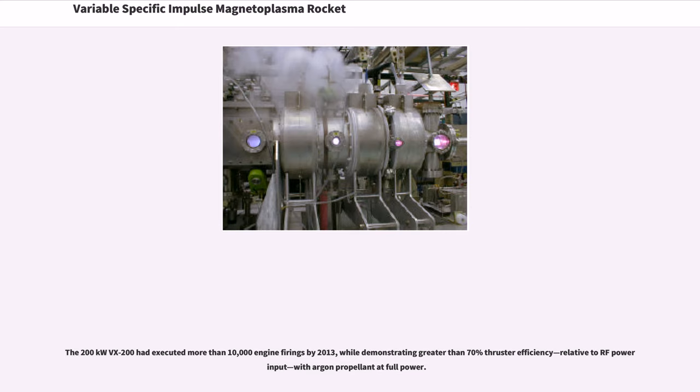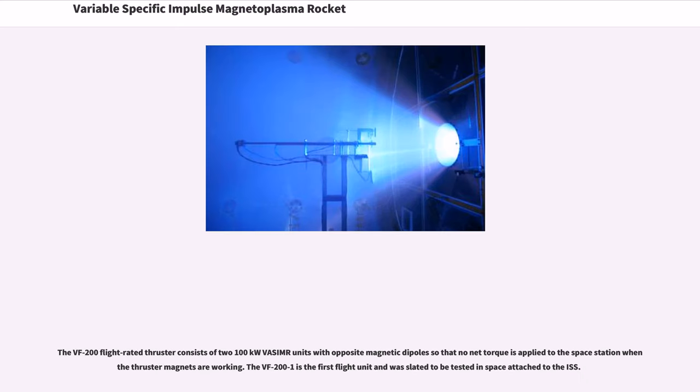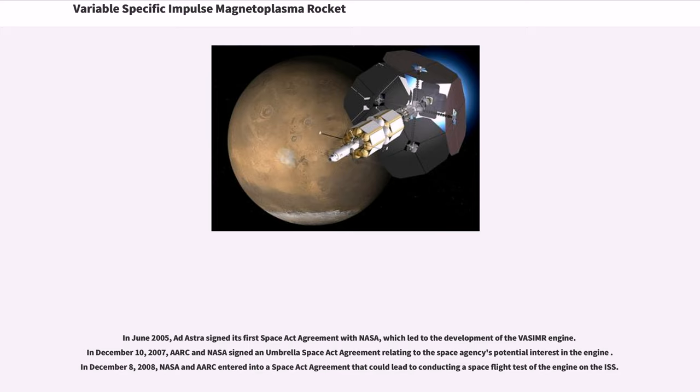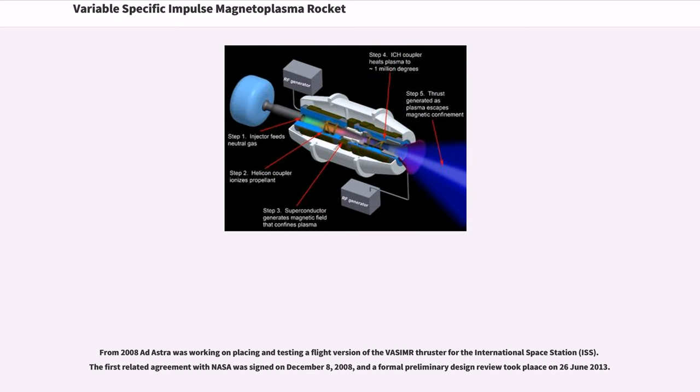The VX-200 flight rated thruster consists of two 100 kW VASIMR units with opposite magnetic dipoles so that no net torque is applied to the space station when the thruster magnets are working. The VX-200-1 is the first flight unit and was slated to be tested in space attached to the ISS. In June 2005, Ad Astra signed its first space act agreement with NASA, which led to the development of the VASIMR engine. In December 10, 2007, ARC and NASA signed an umbrella space act agreement relating to the space agency's potential interest in the engine. In December 8, 2008, NASA and ARC entered into a space act agreement that could lead to conducting a space flight test of the engine on the ISS.